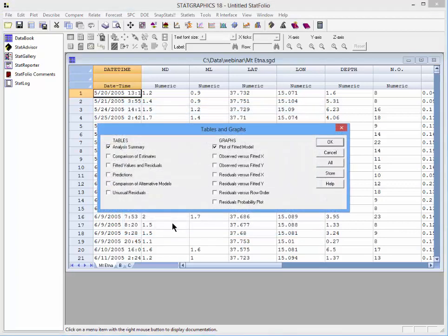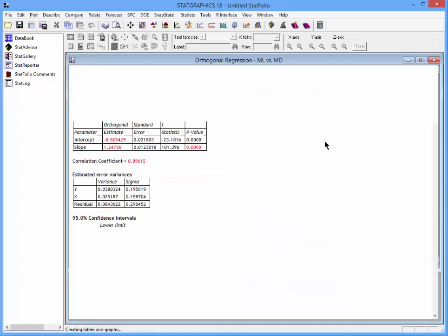When I press OK, I'll see a list of tables and graphs. Again, I'll take the defaults and press OK.